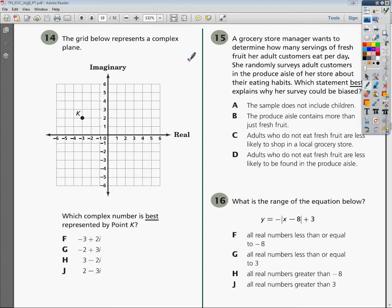The question says the grid below represents a complex plane. Which complex number is best represented by point K?